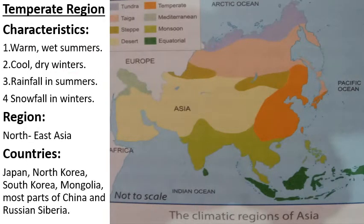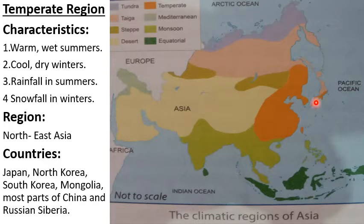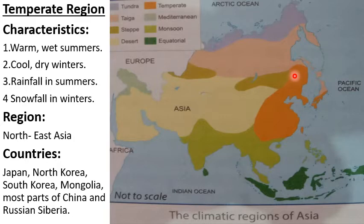Temperate region. The temperate region is shown by orange color on the map. Countries which experience temperate type of climate are Japan, North Korea, South Korea, Mongolia, most part of China, and Russian Siberia. The characteristics of this climate are warm, wet summers and cold, dry winters, with some rainfall during summer season and snowfall during the winter season.